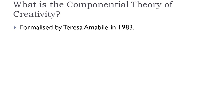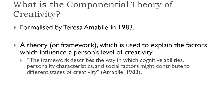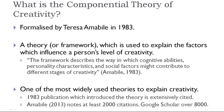It was formalized by Teresa Amabile in 1983. In short, it is a theory or framework which is used to explain certain factors which can influence a person's level of creativity. To quote Amabile, the framework describes the way in which cognitive abilities, personal characteristics, and social factors may contribute to different stages of creativity. It is one of the most widely used theories to explain creativity. The 1983 publication which introduced the theory is extensively cited — a 2013 paper by Amabile notes at least 2,000 citations, and Google Scholar shows over 8,000 citations, though the reliability of this may be questioned.